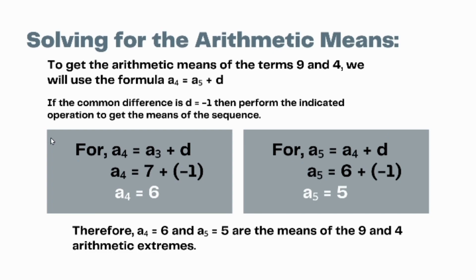After getting the nth term of the sequence, let's solve for its means. To find the missing terms between the extremes 9 and 4, we use the formula Aₙ = Aₙ₋₁ + d. With a common difference of −1, we get A₄ = A₃ + d = 7 + (−1) = 6. Next, A₅ = A₄ + d = 6 + (−1) = 5. Therefore, A₄ = 6 and A₅ = 5 are the arithmetic means between the extremes 9 and 4.